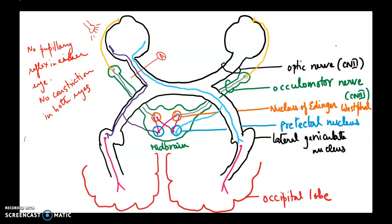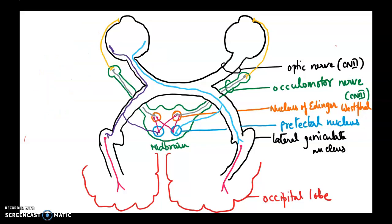Moving on to the second scenario: damage to the optic chiasm. If we have damage in the optic chiasm, the blue neuron carrying sensory information to the opposite side is damaged. However, the purple neuron is fine, so the signal will be sent to the occipital lobe and also to the pre-tectal nucleus via the purple neuron.